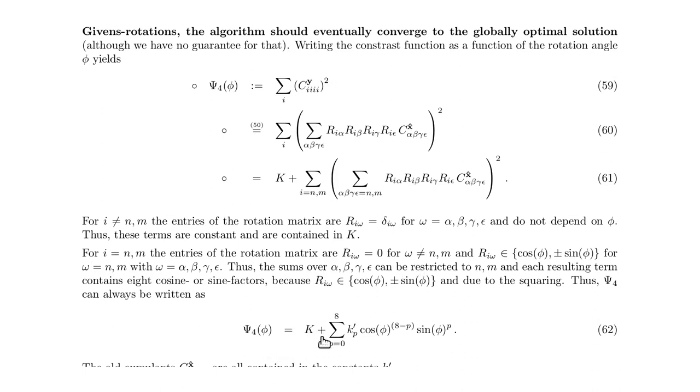A constant plus a sum over three factors times eight cosine and sine values. So the exponent here is eight minus p and here is an exponent p.